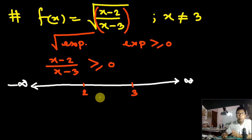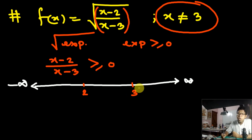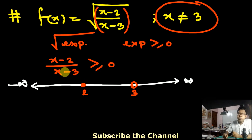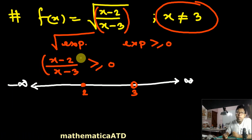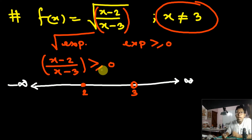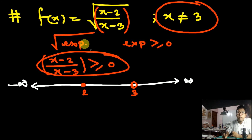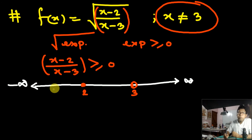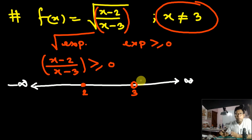The real line is divided into three sub-intervals: (−∞, 2), (2, 3), and (3, ∞). Since x ≠ 3, that point is discarded. But x = 2 is included: putting x = 2 gives (2−2)/(2−3) = 0/(−1) = 0, and 0 ≥ 0 is a true statement. Now apply the wavy curve method — the critical points are 2 and 3.